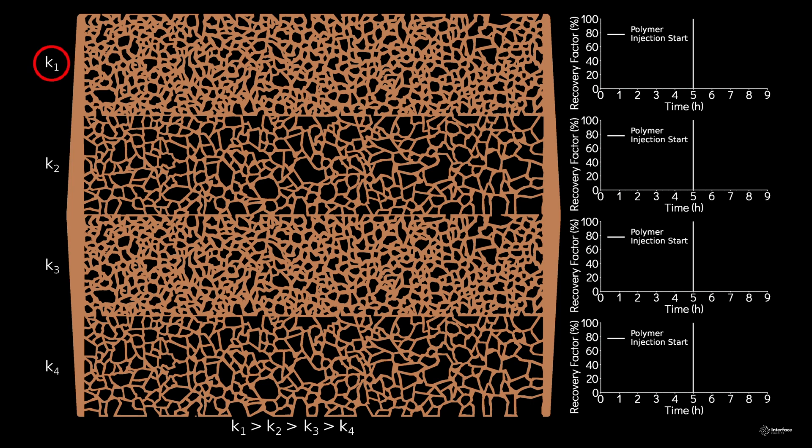Zone K1 at the top of the analog has the highest permeability, down to zone K4 at the bottom with the lowest. Each zone is in fluid communication with every other zone.